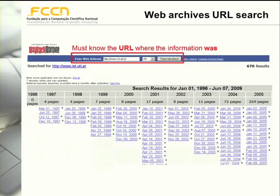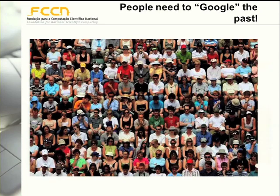There are several web archives worldwide and most of them provide a URL search service. Basically a user inserts a URL and then the service provides a list of versions of that URL that were archived in the past. But the problem is that it is extremely difficult for users trying to find given information published in the past to know the exact URL where this information was published. So what people need to take advantage of web archives is full text search services.